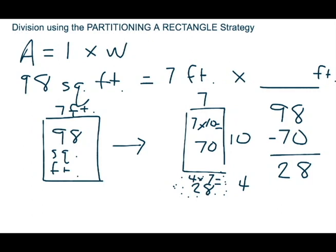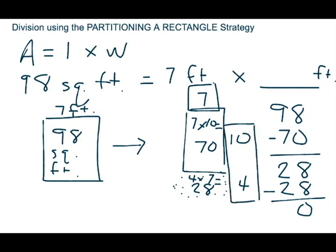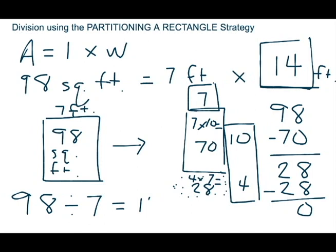Now I'm going to take that 28 found here and subtract. When I get to 0, I know that I'm done. We kept the one factor of 7 throughout this problem, but we now have a 10 and a 4 as factors for the width. I need to solve 10 plus 4, and that's going to give me the unknown. 10 plus 4 is 14. So 98 equals 7 feet times 14 feet. The division problem in the same fact family: if we know 7 feet times 14 feet equals 98, we know that 98 divided by 7 equals 14.